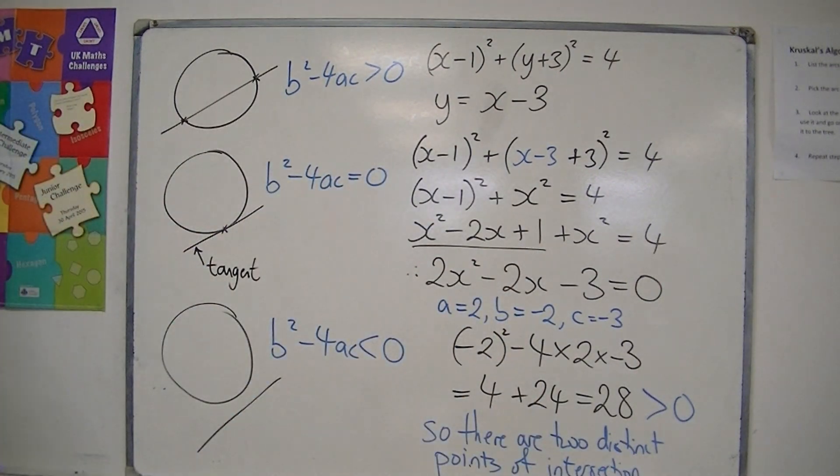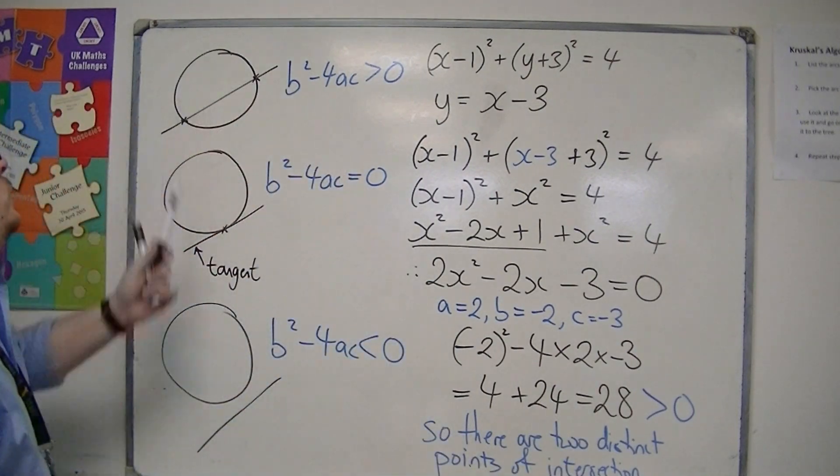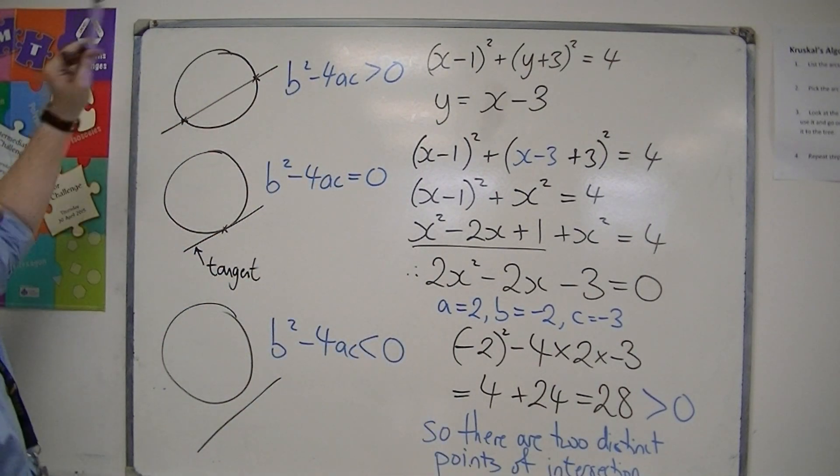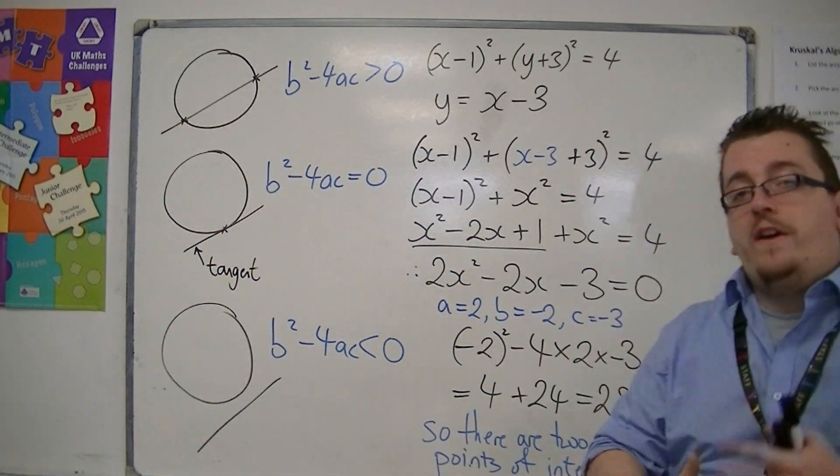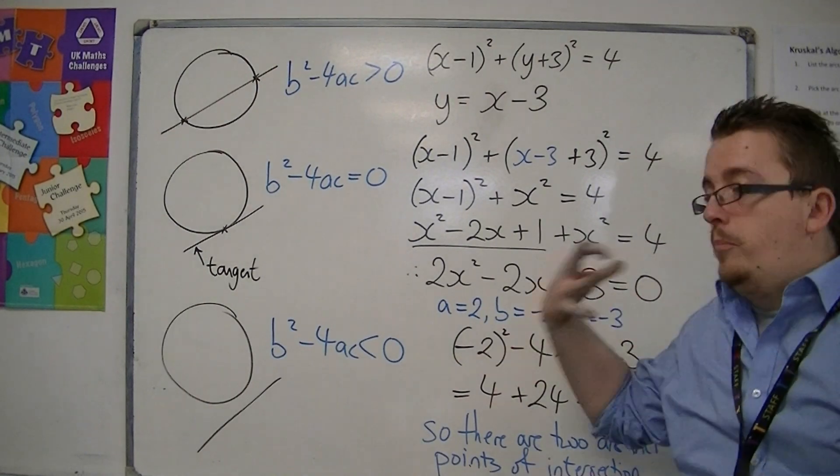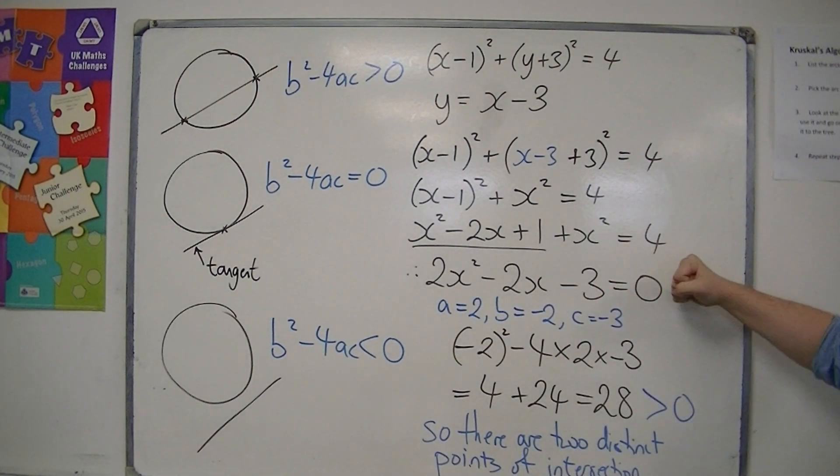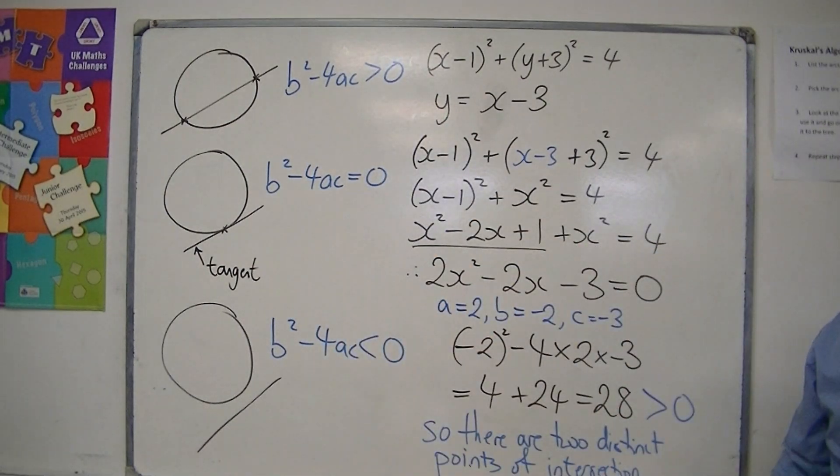So because the discriminant is greater than zero, we have this situation, where the straight line is intersecting the circle at two points. So in order to determine whether a line intersects a circle or not, use simultaneous equations to get it down to a quadratic, which you can then employ the discriminant to evaluate whether we have one of these three situations.